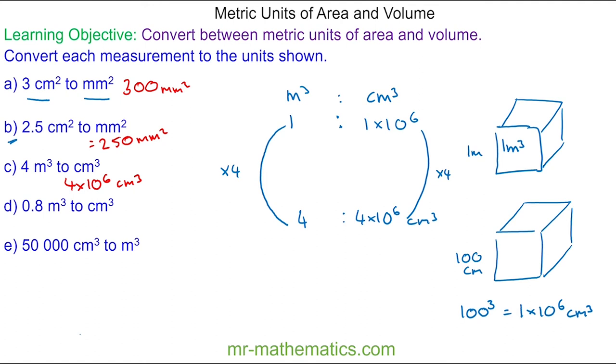Do you want to try questions D and E? Pause the video and resume when you're ready. For question D, we'll multiply the one metre cubed by 0.8. We'll do the same to the centimetres cubed, so we have eight times ten to the power of five centimetres cubed.